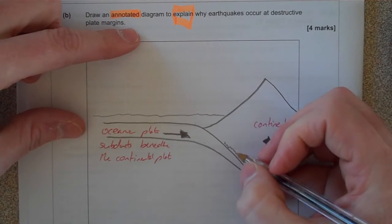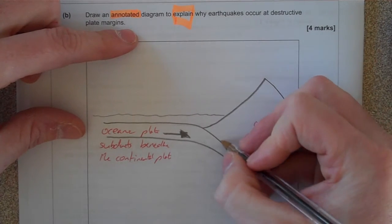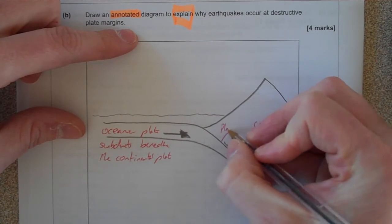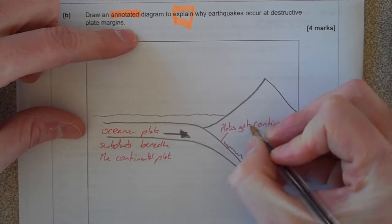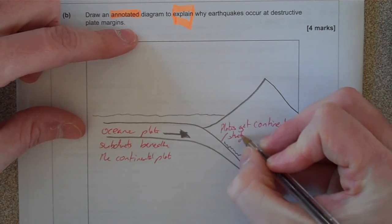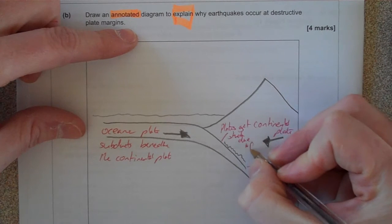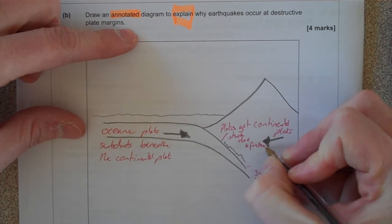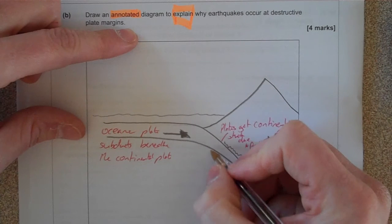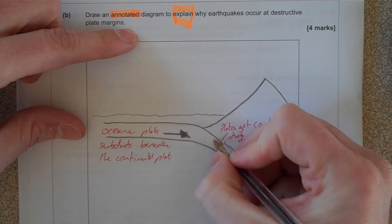And the earthquake occurs because the plates get stuck. So at this point here, the plates get stuck due to friction. And then I'm going to mark on, at this point here, I'm going to put on a focus point where the earthquake begins from. I'm going to label that,